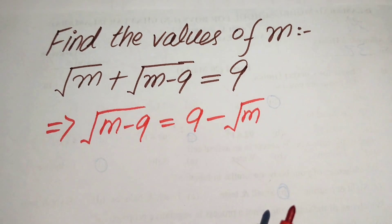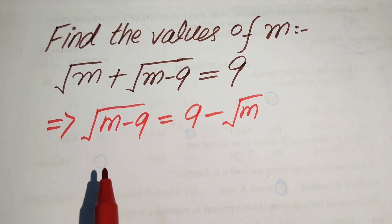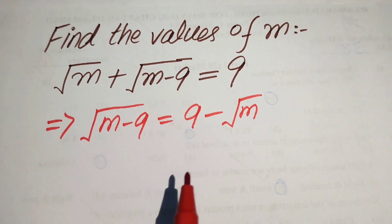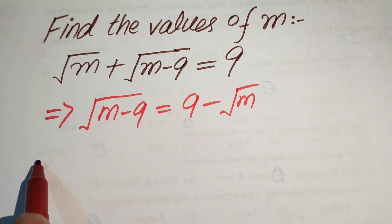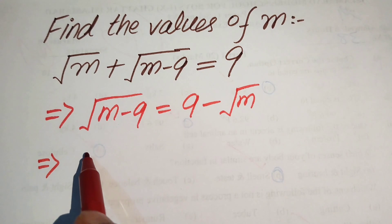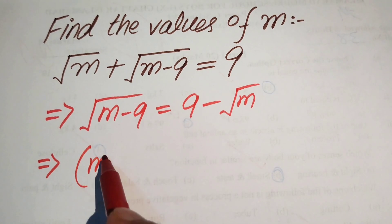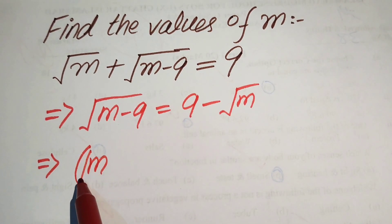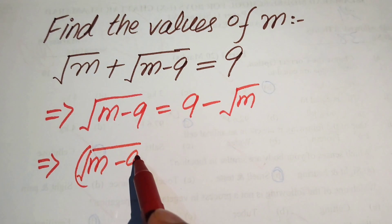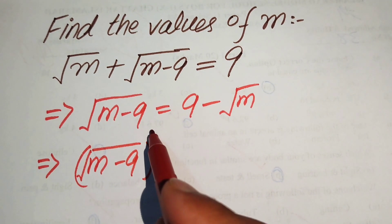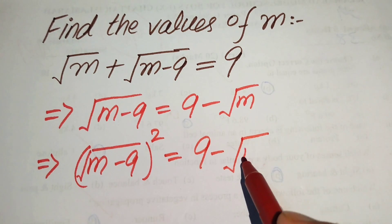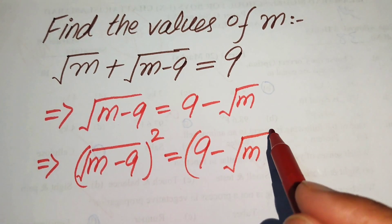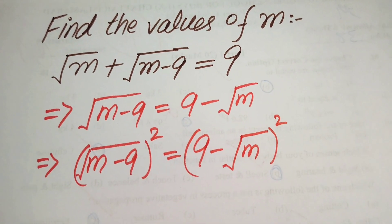Our first target is to eliminate the square root sign on both of these terms, then we can easily find the values of m. So we first need to take the squaring on both sides. When we take squaring on both sides it is written as: square root of m minus 9, whole squared, equals 9 minus square root of m, whole squared.